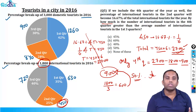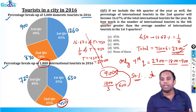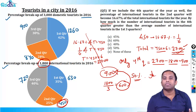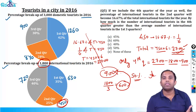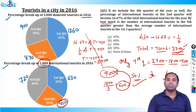By how much is 900 greater than the average number of international tourists in the first three quarters? Total for first three quarters is 1800, average is 1800 by 3 equals 600. So 900 is greater than 600 by how much? Change of 300 on 600 is 1 by 2, that is 50%. That's the answer.